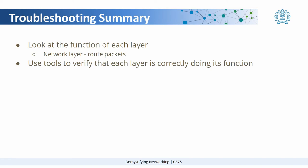To summarize, what we have to do at each layer is to look at the function of that layer. For example, the function of the physical layer is to provide connectivity — ensure that all the wires are in place, the switches are turned on, etcetera.